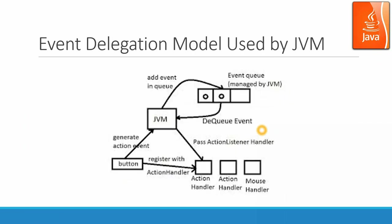Here we have the event delegation model used by the JVM. We can have different types of event handling mechanisms. For JavaScript, we use an event loop — a single loop, not parallel. In the Qt package, they use a signal and slot mechanism. In the JVM, we use the event delegation model, which can be multi-threaded.